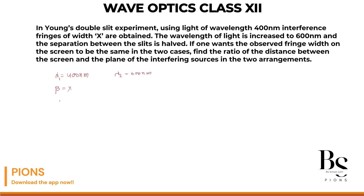The separation between the slits is halved — so if the original separation is d, it becomes d by 2. We want the observed fringe width on the screen to remain the same, so beta 2 is also x. We need to find the ratio of the distances between the screen and the plane of the interfering sources in the two arrangements — that is, the ratio of D1 to D2.